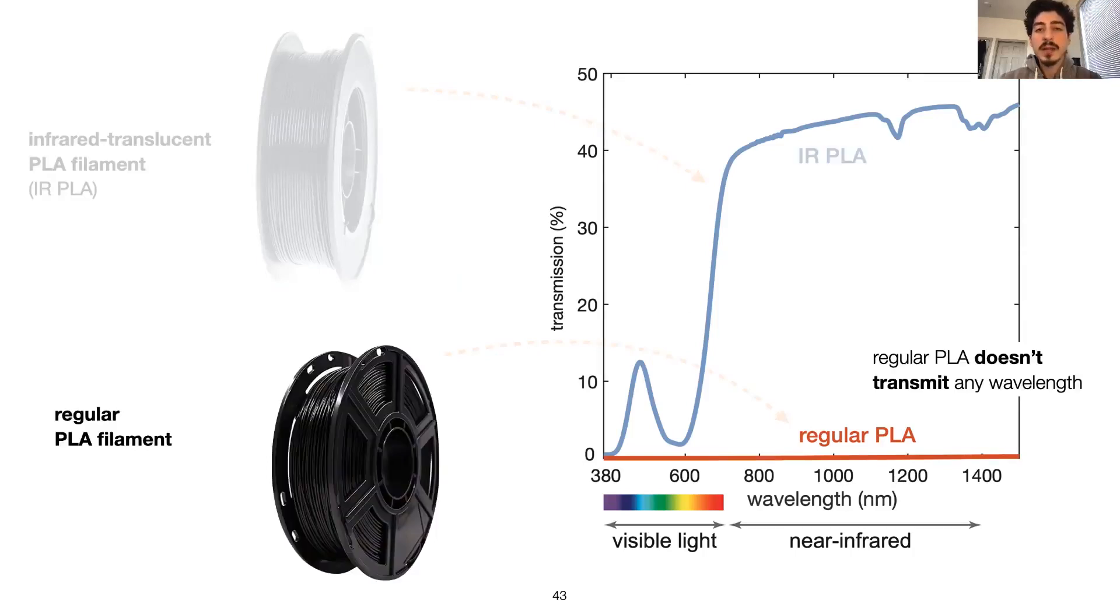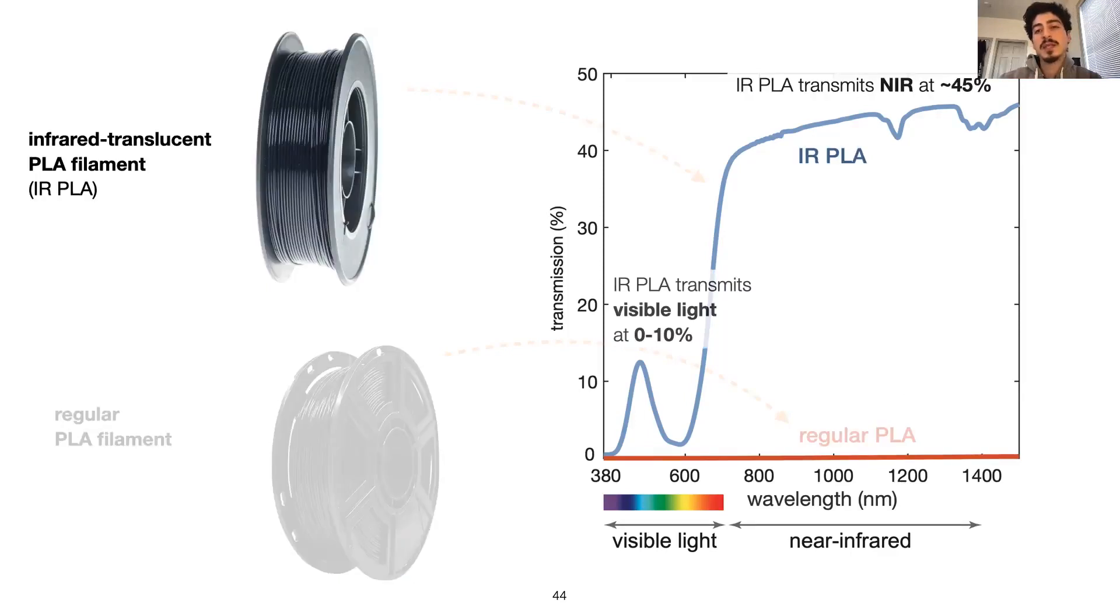For the regular PLA, we see that the transmission is at 0% for all wavelengths, which means that it blocks both visible and near-infrared light. For the special IR PLA, we see that it transmits near-infrared at 45% while it blocks most of visible light.